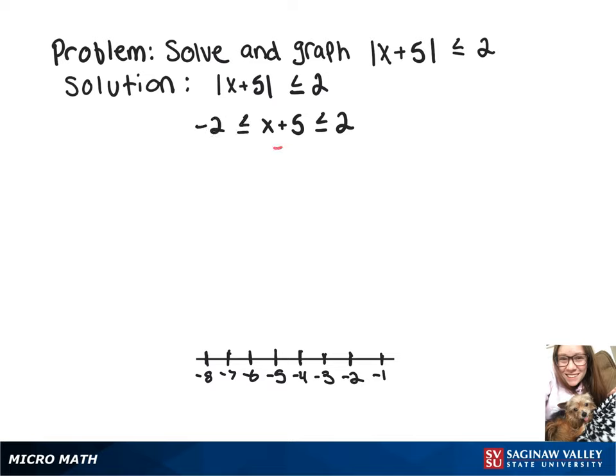So now we're going to subtract 5 from all of those, and that's going to leave us with negative 7 is less than or equal to x is less than or equal to negative 3.